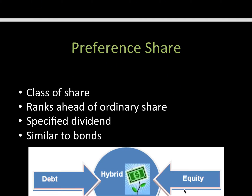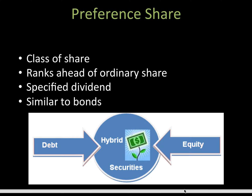Then we've got this thing called a preference share, and it's kind of like a bond and a share had a little love child — it's a hybrid of debt and equity. It's a type of share that if a company goes bankrupt, it gets ranked ahead of the ordinary shareholders but below the bondholders. It gets a specific dividend, and that makes it similar to bonds. There is definitely a market for it, and what's nice about it is some of them you can convert into equity at a later stage, and it has been used quite successfully in the past for raising capital.